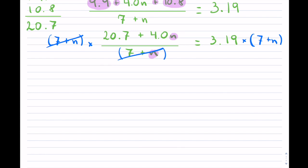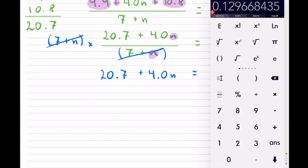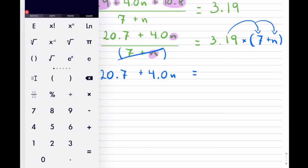So now I have 20.7 plus 4n equals, and then on the right hand side, I can get rid of that 7 plus n. I can distribute this across. I have to multiply it by both, so here I will have 3.19 times 7, so it is 22.33 plus 3.19n.